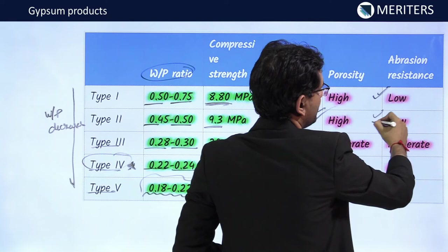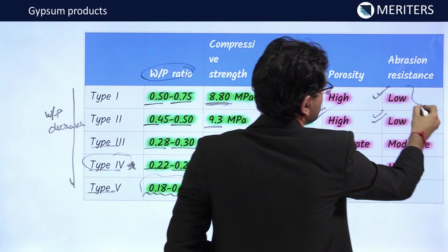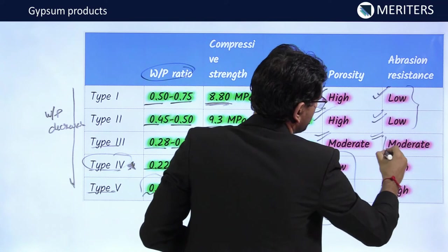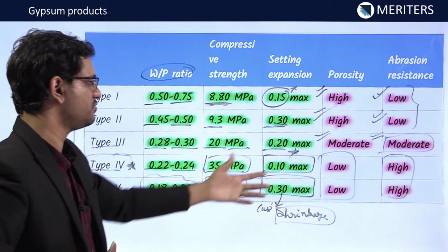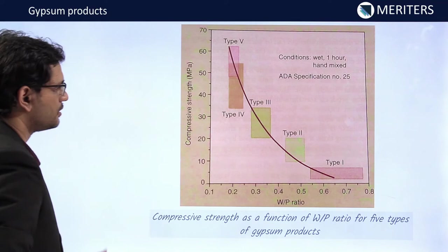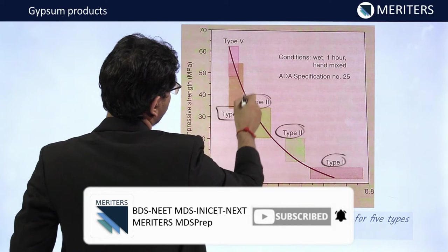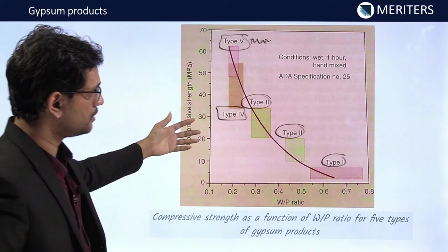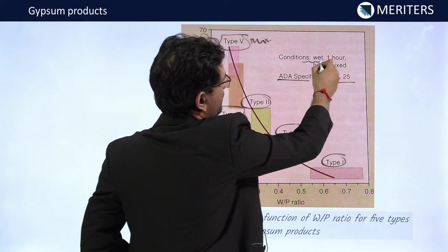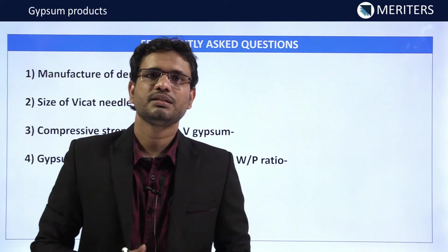Abrasion resistance is low for types 1 and 2, moderate for type 3, and high for types 4 and 5. A graph shows increasing compressive strength from type 1 through type 5, according to ADA specification number 25, measured in wet condition one hour after hand mixing.